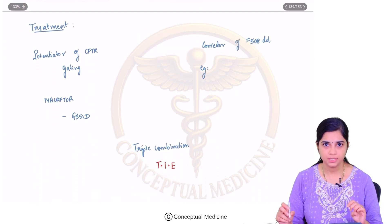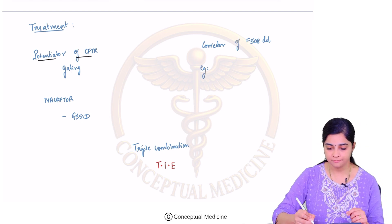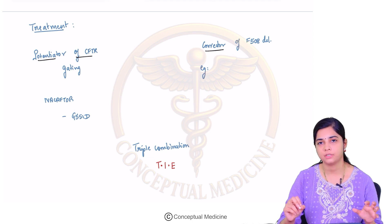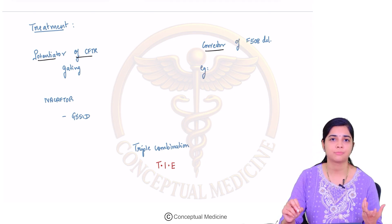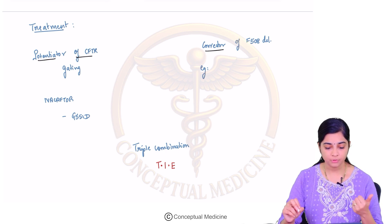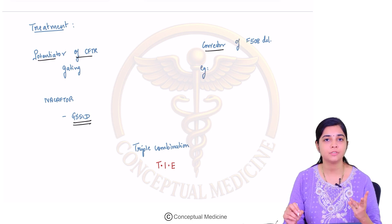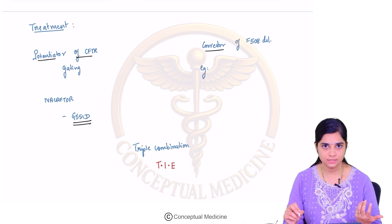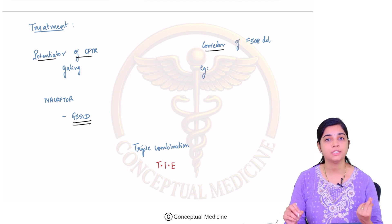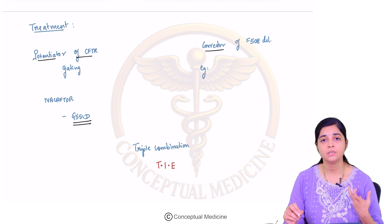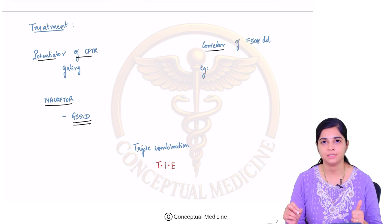Treatment of cystic fibrosis involves two groups of drugs: CFTR potentiators and CFTR correctors. Potentiators of CFTR gating target the class 3 G551D mutation, where there is a problem with ATP hydrolysis and gating. Drugs which improve gating thereby potentiate the action of CFTR — that drug is ivacaftor.